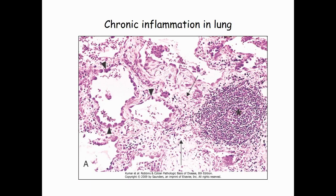This is a picture of lung tissue. You can easily see the aggregates of lymphocytes and fibrosis between the interstitial tissue.